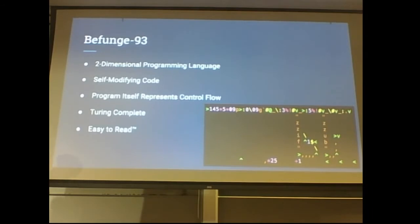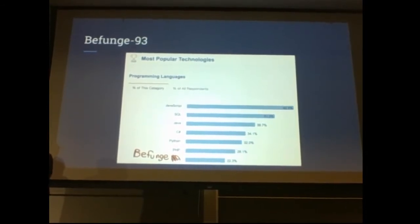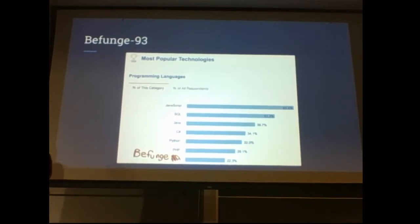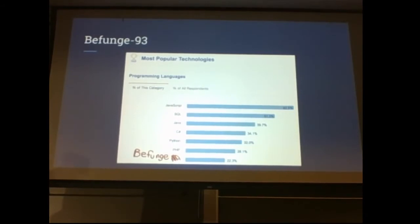But the thing is, Bofunge is not the most popular language. In fact, it's not even in the top five. And after tons of research and lots of speculation, we think we know why. And that is the lack of multi-parallelism, concurrency, and threading.